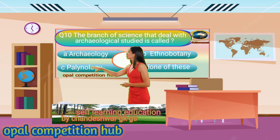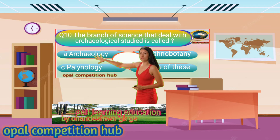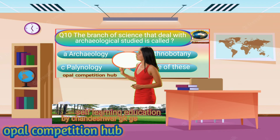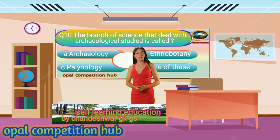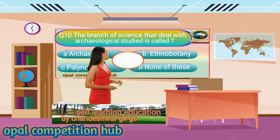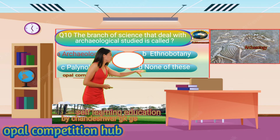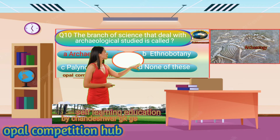Question number 10. The branch of science that deals with archaeological study is called. Your options are: Option A. Archaeology, Option B. Ethnobotany, Option C. Pallenology, Option D. None of these. Your time starts now. Your answer will be Option A. Archaeology.